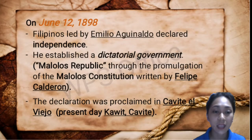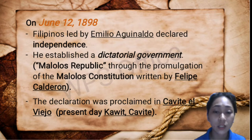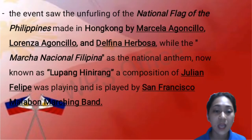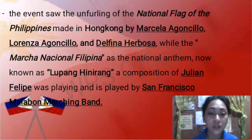On June 12, 1898, Filipinos led by Emilio Aguinaldo declared independence. When Aguinaldo returned to the Philippines after a self-exile in Hong Kong, he established a dictatorial government, also known as the Malolos Republic. Through the promulgation of the Malolos Constitution written by Felipe Calderon, the declaration was proclaimed in Cavite el Viejo, or present-day Kawit, Cavite. The event saw the unfurling of the national flag of the Philippines, made in Hong Kong by Marcela Agoncillo, Lorenza Agoncillo, and Delfina Herbosa, while the Marcha Nacional Filipina served as the national anthem, now known as Lupang Hinirang.